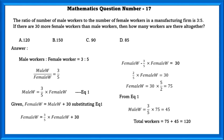From equation 1, substituting the value of female workers, we can find the value of male workers: that is 45. So the total number of workers is equal to female workers plus male workers, that is 120.